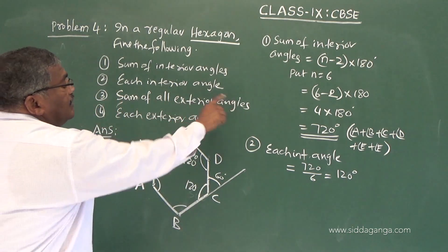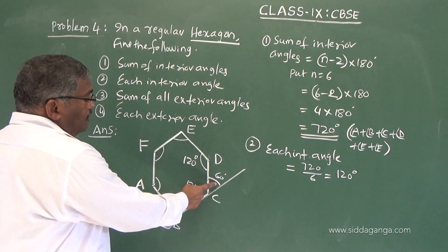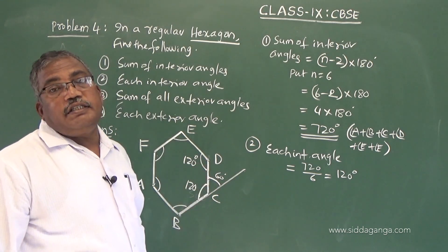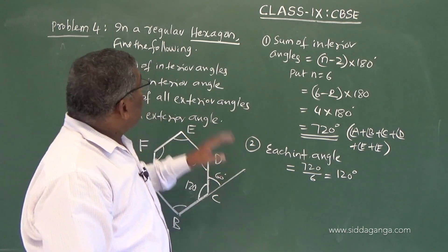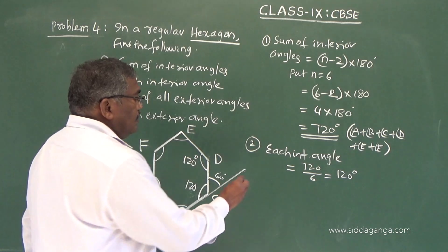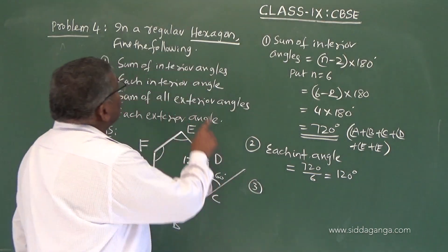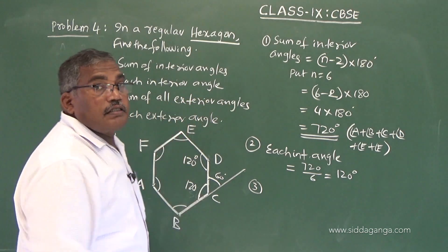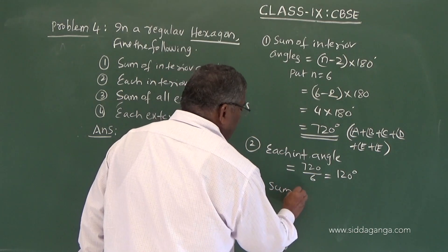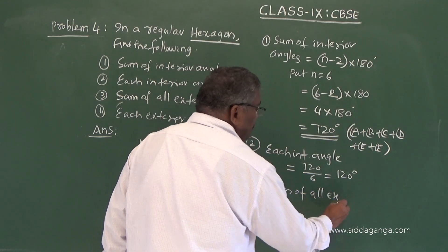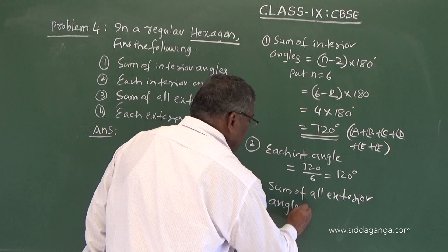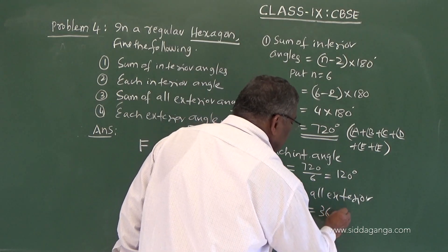For the third part — sum of all exterior angles. There are 6 exterior angles, each being 60 degrees. The general rule is that for any polygon, the total of exterior angles is 360 degrees. So the sum of all exterior angles equals 360 degrees.